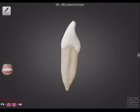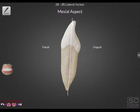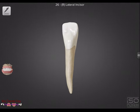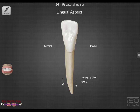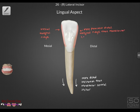Moving on to the mesial view, the incisal edge is lingual to the apex from proximal views. Looking at the lingual view, we can see the mandibular lateral incisor with a more prominent distal marginal ridge. There's also a barely discernible lingual fossa, and this tooth is fairly smooth anatomically.